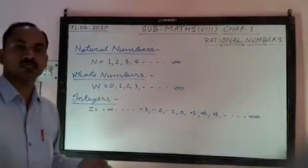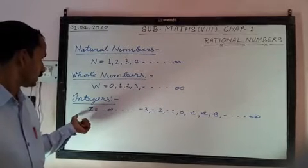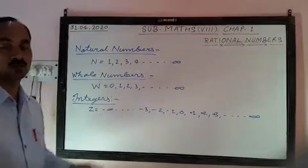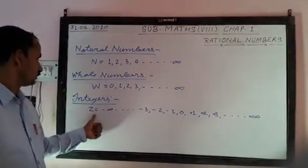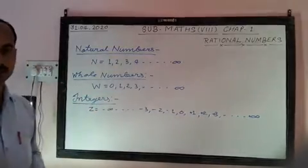An integer is represented by Z. Z is taken from the Greek language, the word Zelen. It means to count. Z represents the group of the integers.